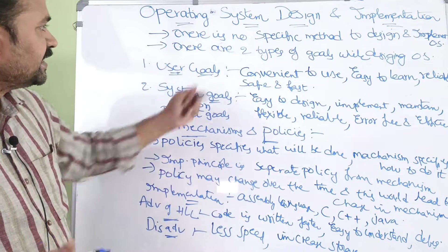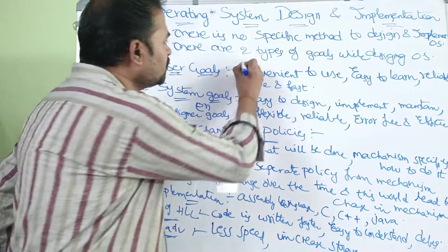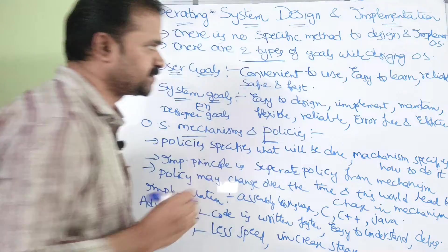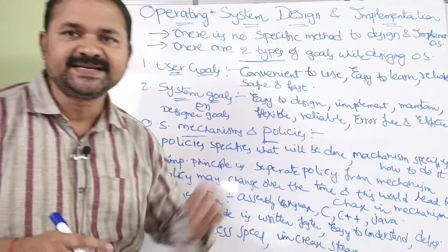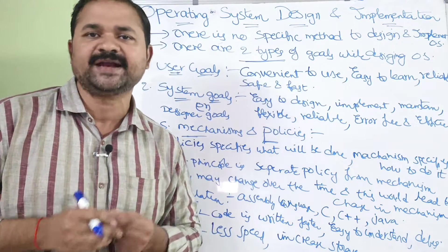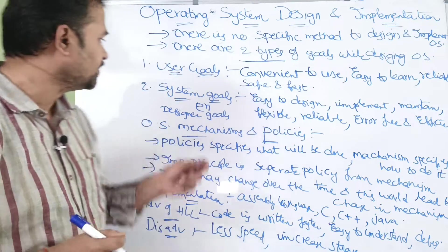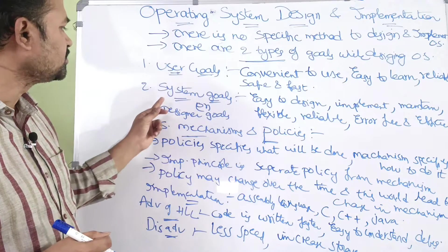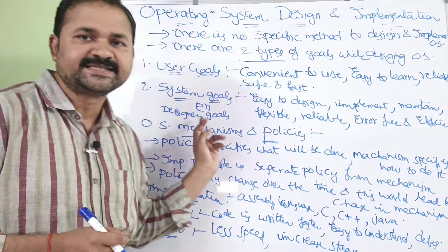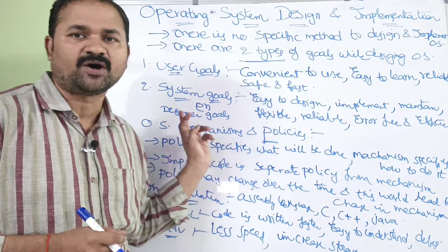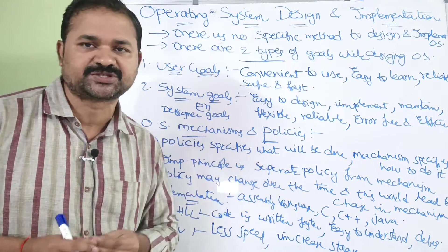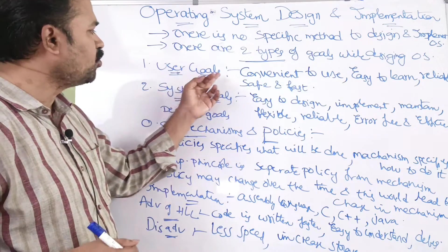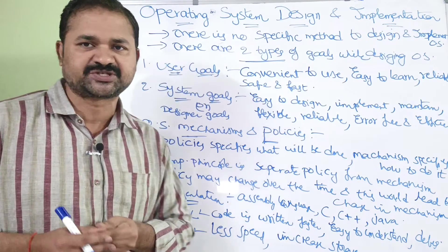But there are two types of goals while designing an operating system. The first one is user goals. The second one is system goals or designer goals. First let us see about user goals.